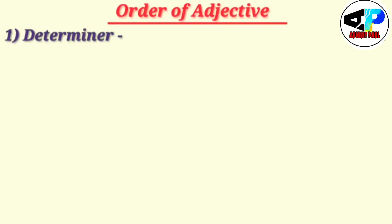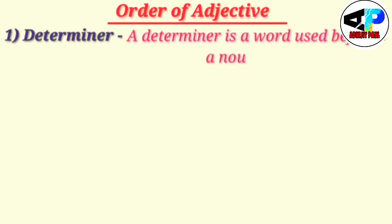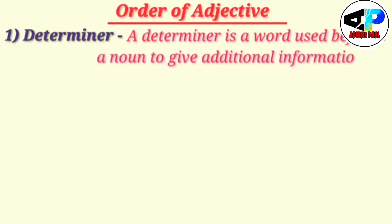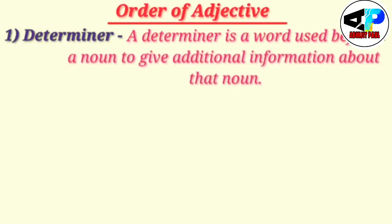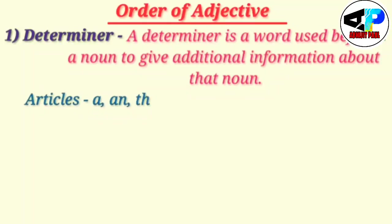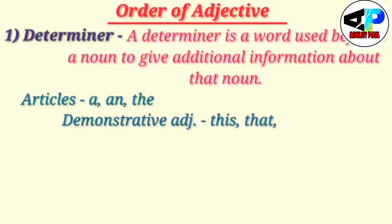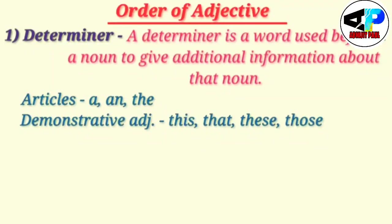Now, you may raise questions — what is a determiner? A determiner is one type of adjective; it is a word that is placed before a noun to give additional information about that noun. The question is, what are the examples of determiners? First, a determiner can be an article — probably you know, 'a' and 'the' are known as articles.